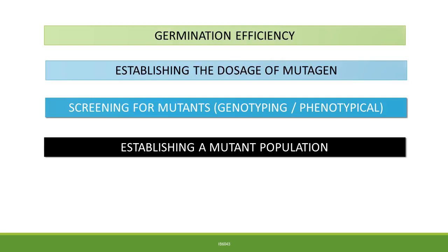Once a mutant population has been established, the progeny are derived by selfing. This ensures that the mutations are retained; however, one should note that mutations are generally lost over successive breeding cycles.